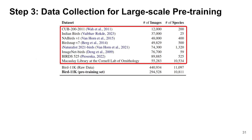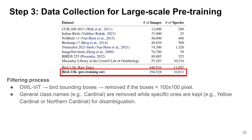In the third step, we combine 7 existing datasets with around 55K images from Cornell Lab to construct a large-scale dataset for pre-training, which contains around 41K bird images with 11K classes. We then pre-process to filter out undesired images where birds are not distinctly visible or class names are ambiguous, retaining around 94K images spanning 10.8K bird classes.